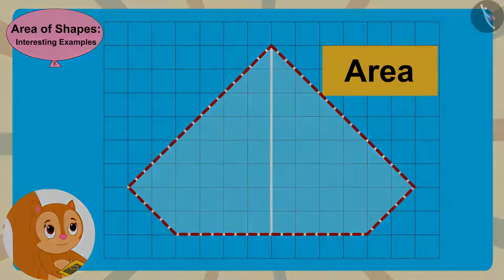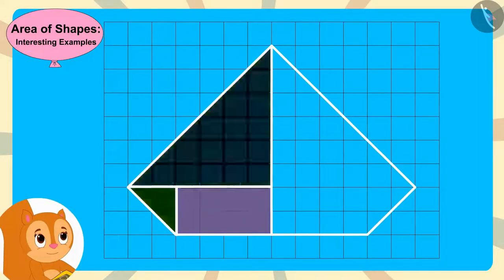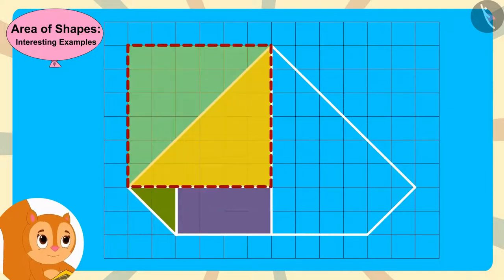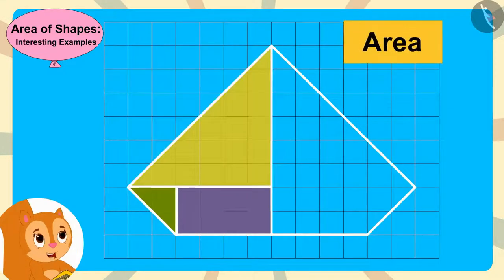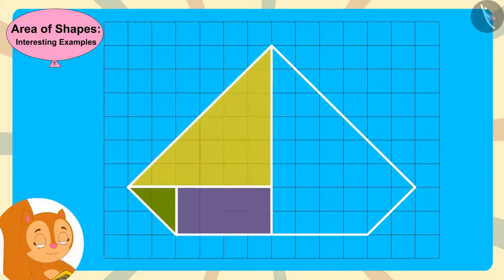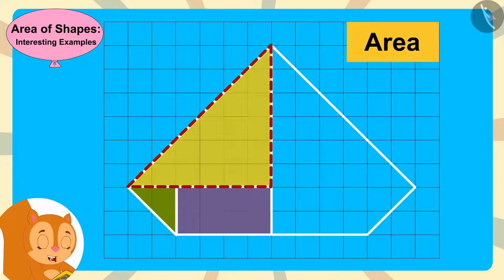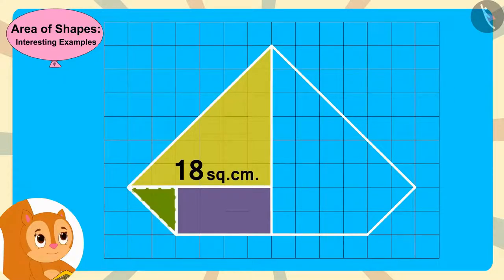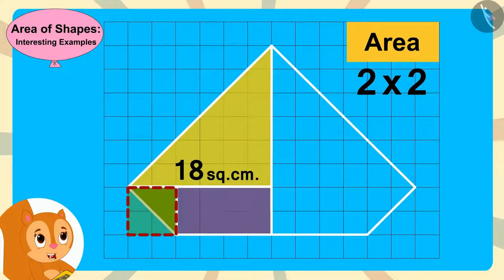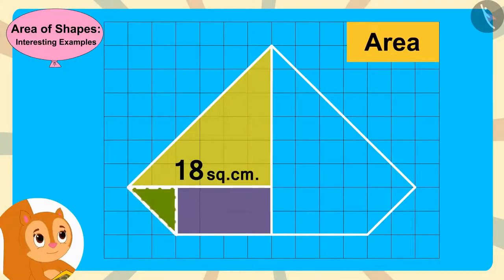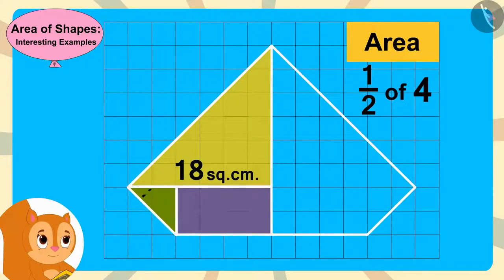Chanda made rectangles and triangles in one part of the diamond's outline. This large triangle is half of a square, and the area of that square is 6 times 6, or 36 square centimeters. So the area of the big triangle is half of 36, or 18 square centimeters. The area of the small triangle is half of a square with area 2 times 2, or 4 square centimeters. So the area of the small triangle is half of 4, or 2 square centimeters.